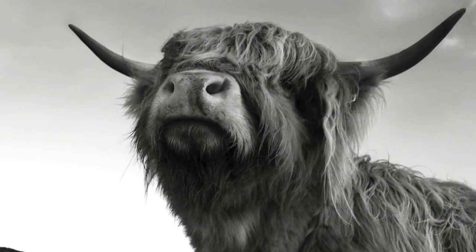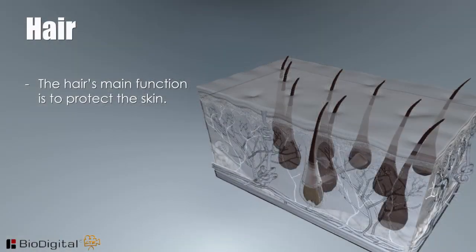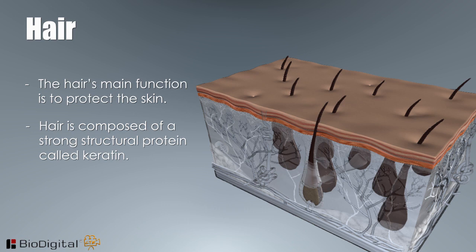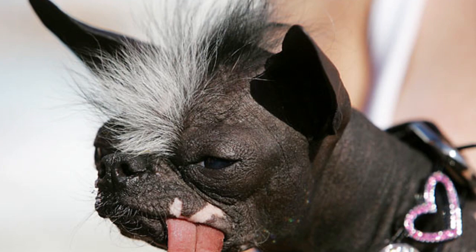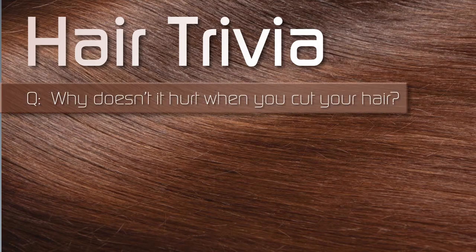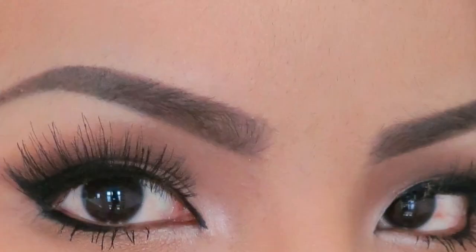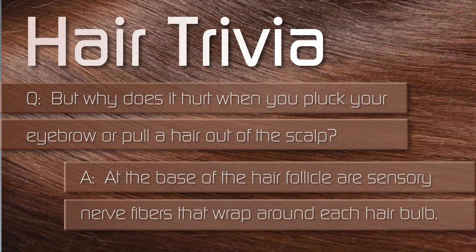The hair is the second major part of the integumentary system. The hair's main function is to protect the skin. Hair is composed of a strong structural protein called keratin and grows within a hollow tube called the follicle. Here's a little hair trivia: hair can be shaved, cut, styled, and groomed, but it doesn't hurt when cut because there are no nerves. However, it does hurt when you pluck an eyebrow or pull a hair from the scalp because sensory nerve fibers wrap around each hair bulb at the base of the follicle.